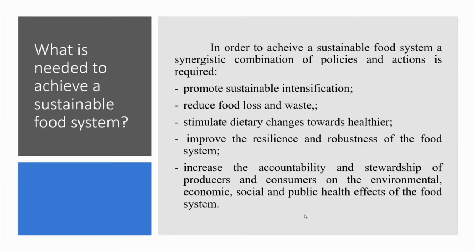What is needed to achieve a sustainable food system? In order to achieve a sustainable food system, a synergistic combination of policies and actions is required: promote sustainable intensification and scale up agroecological approaches; reduce food loss and waste while encouraging the reuse and recycling of unavoidable food waste; stimulate dietary changes towards healthier, less resource-intensive, more plant-based diets; improve the resilience and robustness of the food system by diversification to cope with geopolitical shocks and climate change; and increase the accountability of producers and consumers through participatory policy development, transparency, training, education and improved labeling.